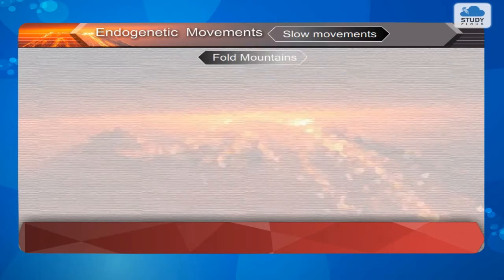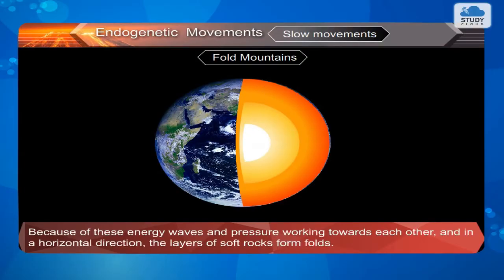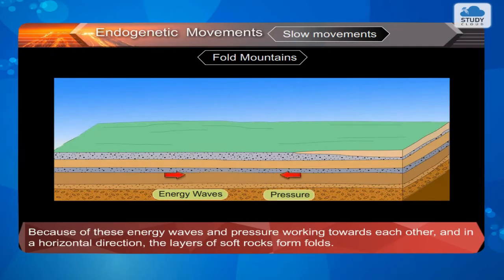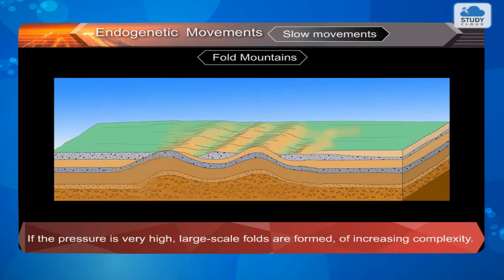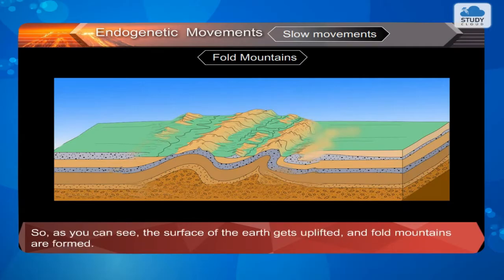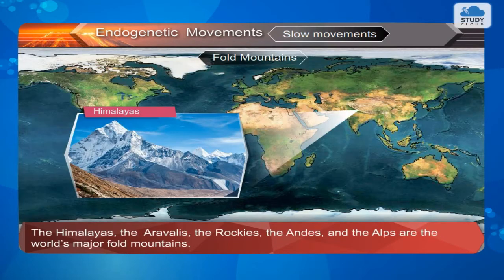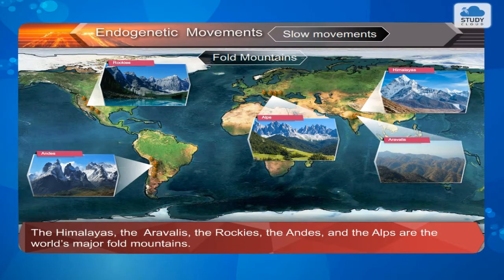Fold Mountains: Energy is transferred from the interior of the earth. Because of these energy waves and pressure working towards each other in a horizontal direction, the layers of soft rocks form folds. If the pressure is very high, large-scale folds of increasing complexity are formed. The surface of the earth gets uplifted and fold mountains are formed. The Himalayas, the Aravalis, the Rockies, the Andes, and the Alps are the world's major fold mountains.